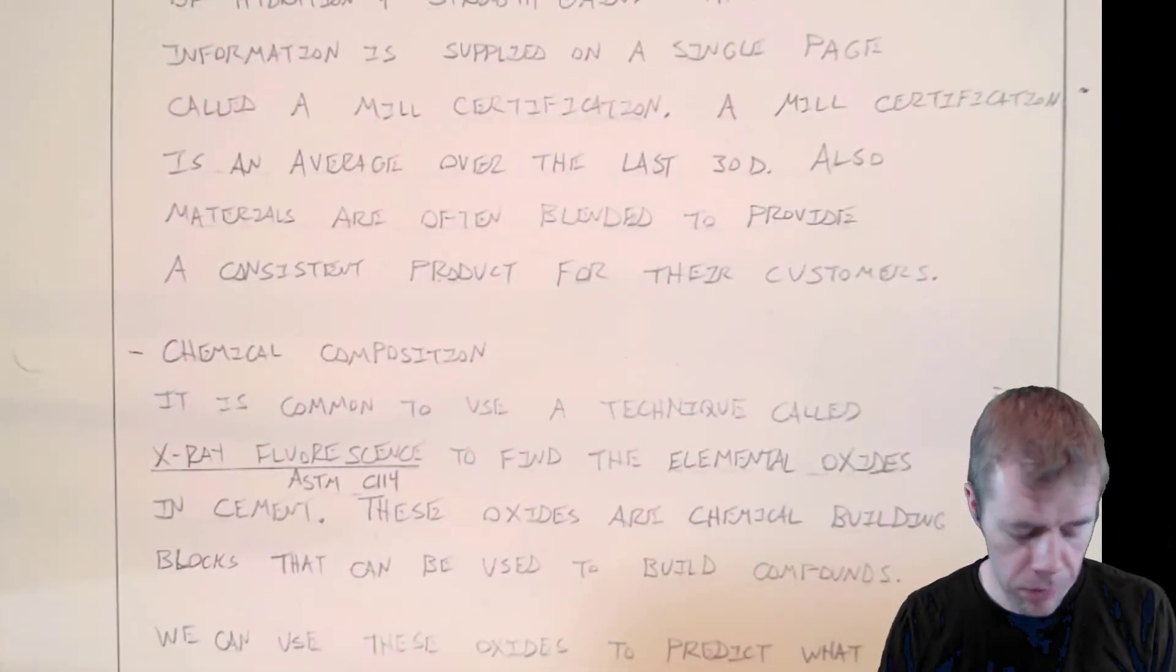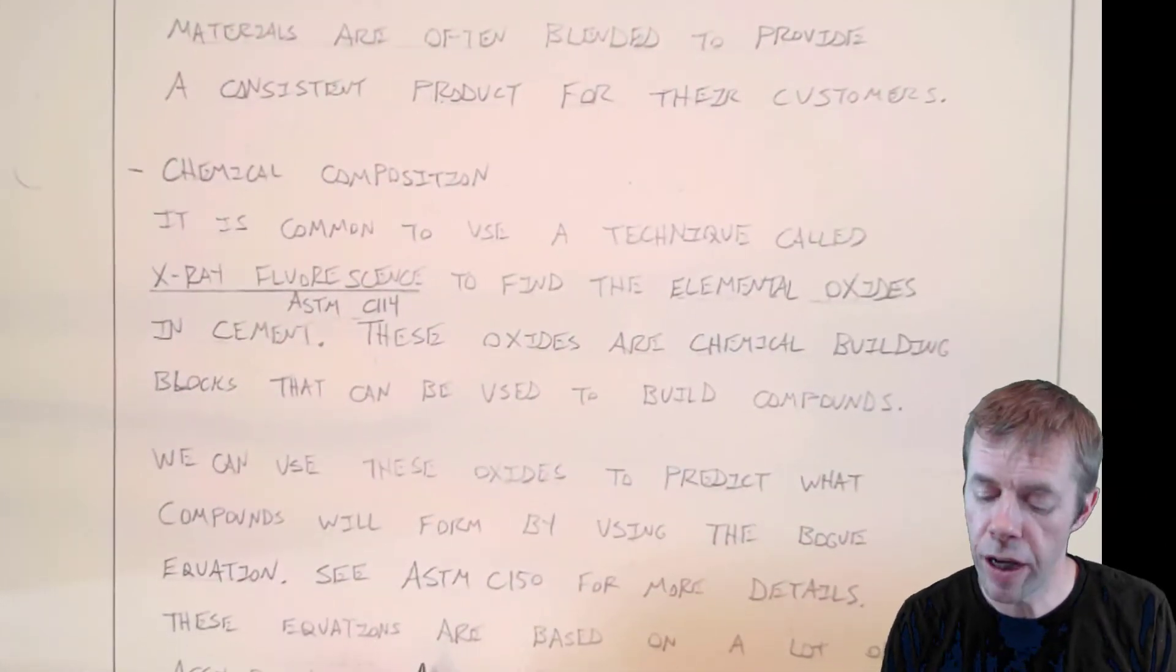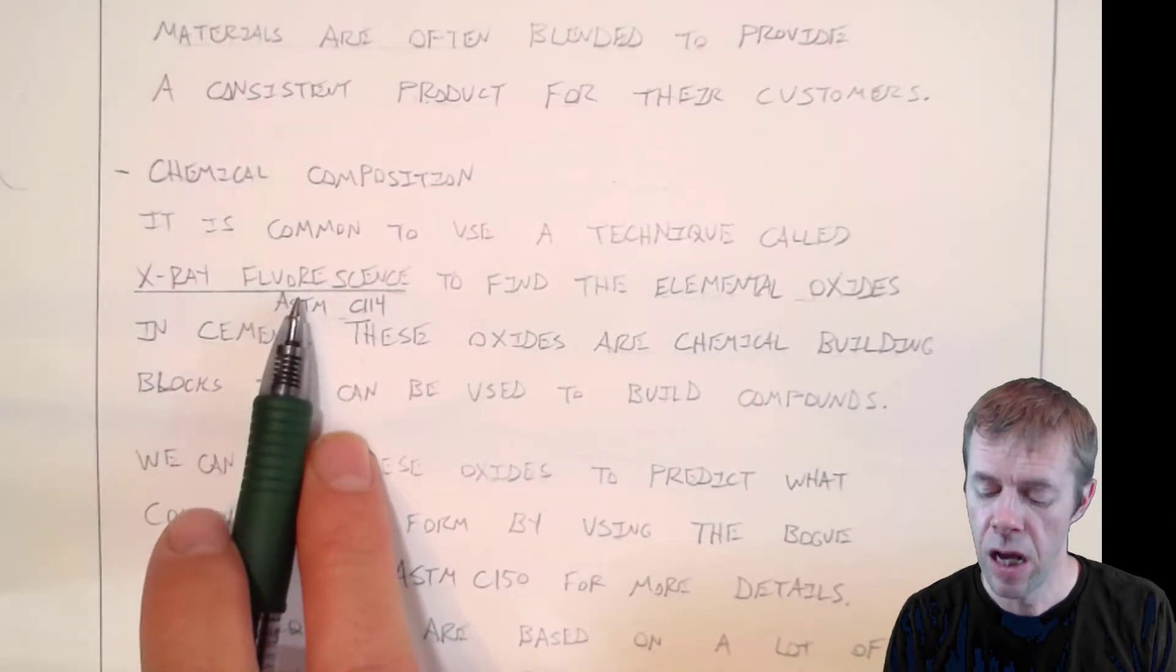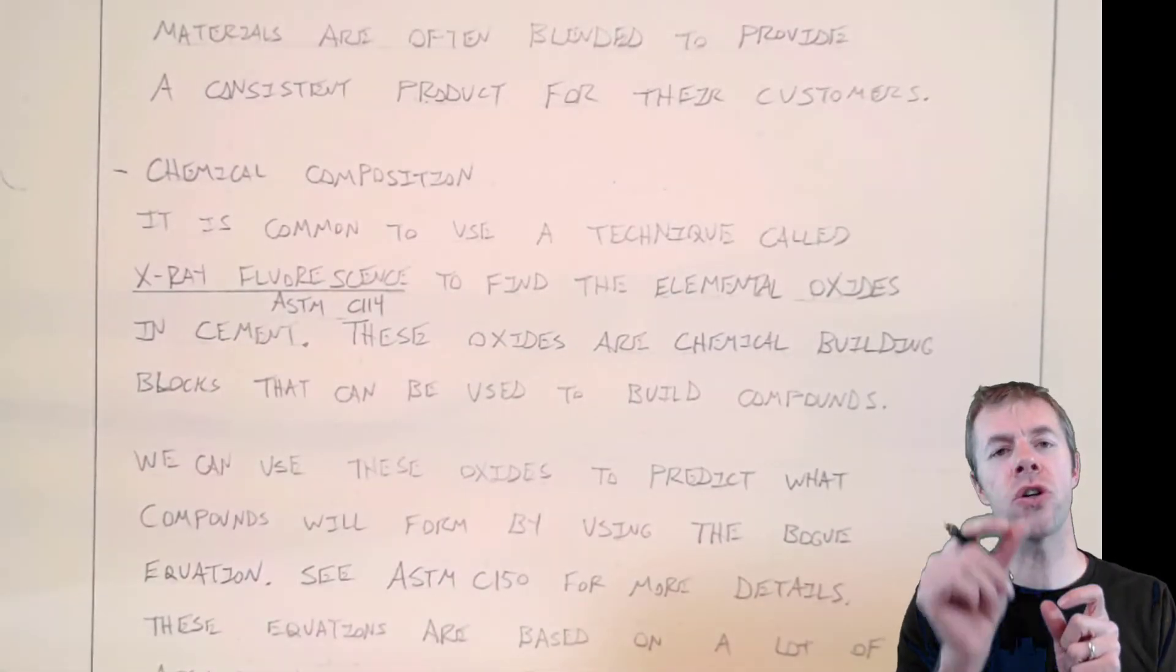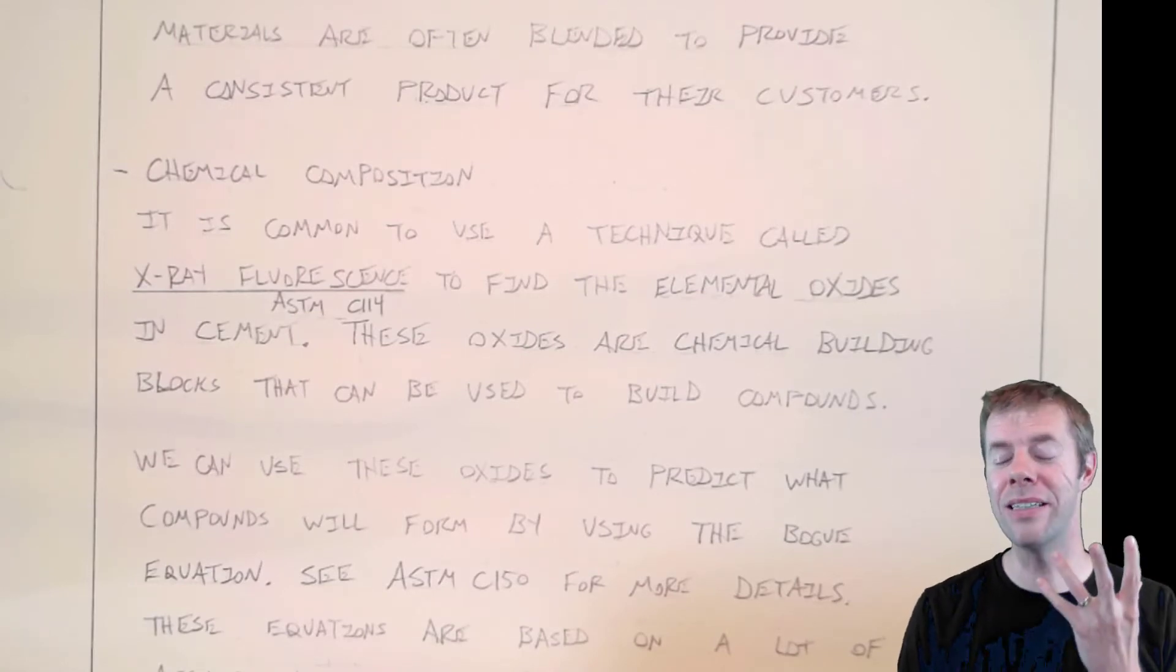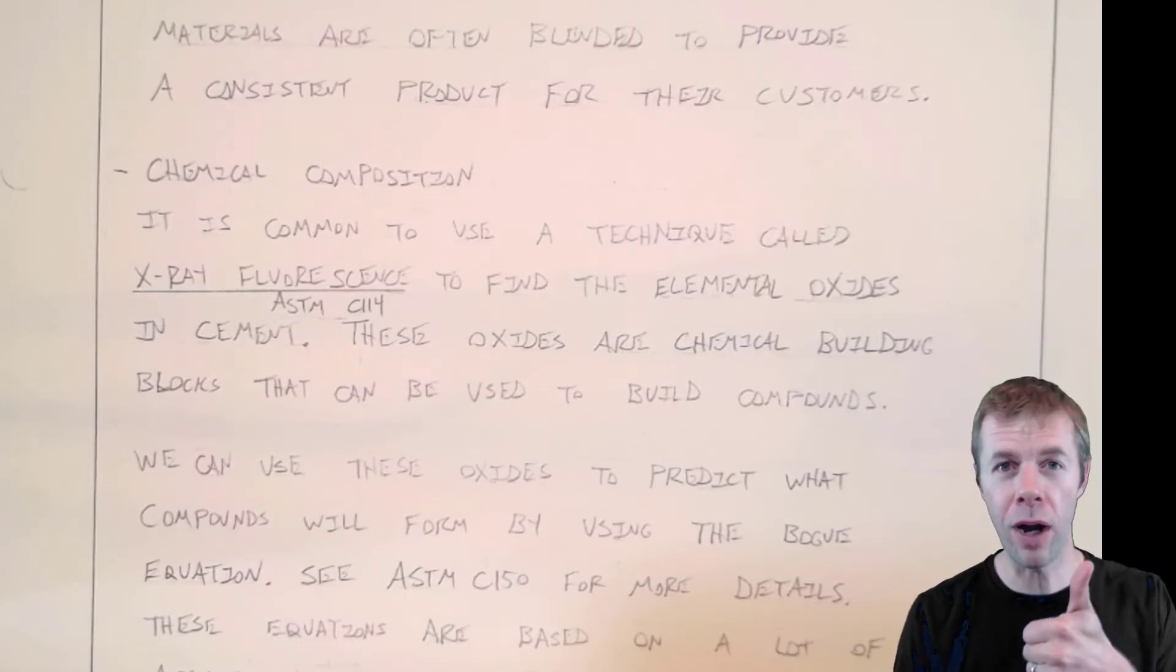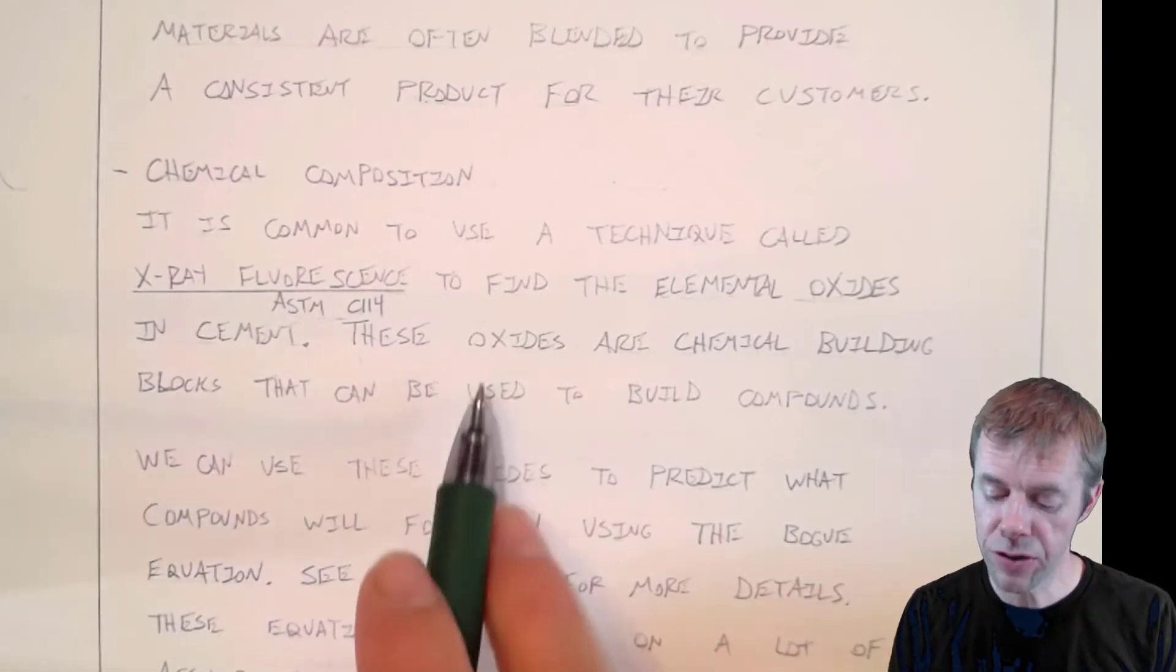Chemical composition - let's get started with that first. The most common used technique to evaluate the chemical composition of cement is something called X-ray fluorescence. This is when you actually bombard an atom with lots of X-rays, and they'll fluoresce certain characteristic X-rays based on their elemental composition. This is called the photoelectric effect. Einstein actually developed it and won a Nobel Prize for it.